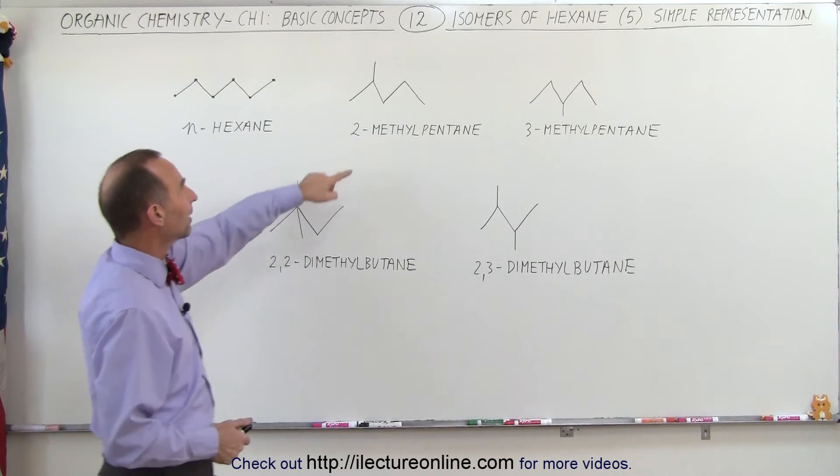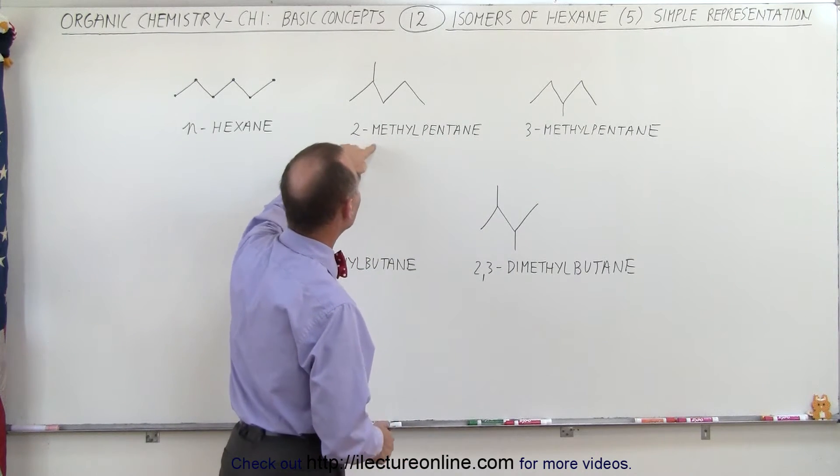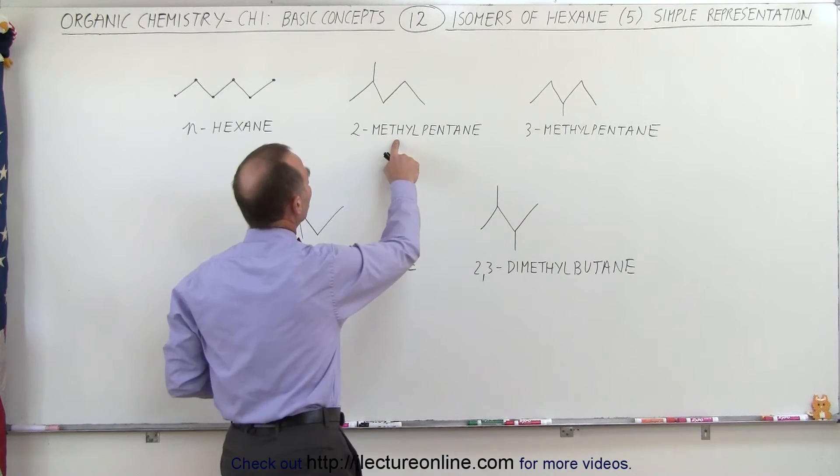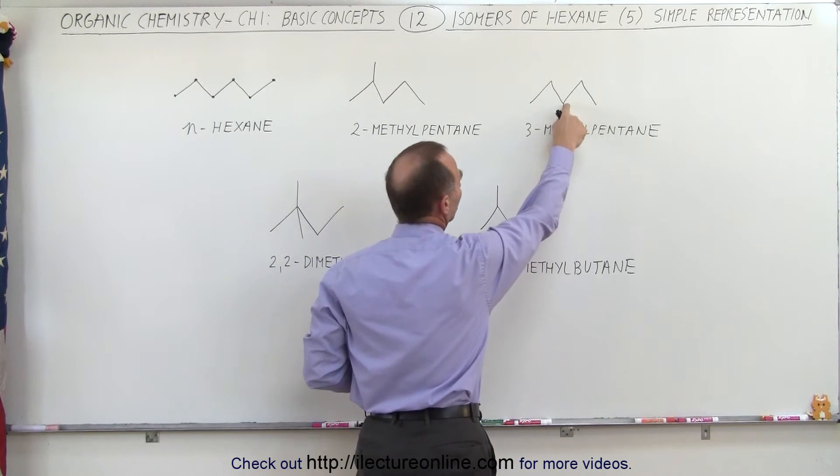Here we have the second isomer of hexane and the third isomer called 2-methylpentane, because the methyl group is connected to the second carbon here, and the methyl group here is connected to the third carbon.